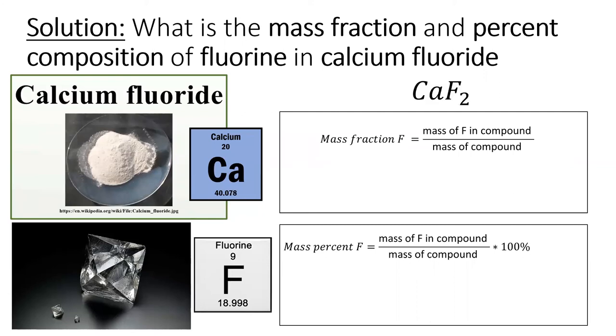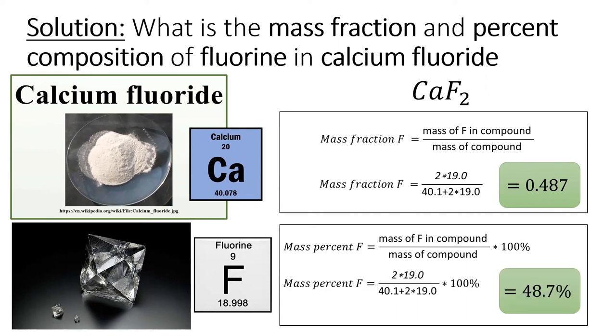To calculate the mass fraction, we'll take the mass of two fluorine atoms and divide it by the mass of one calcium and two fluorine atoms. This gives us 0.487. To turn that into a mass percent, we just need to multiply it by 100%.